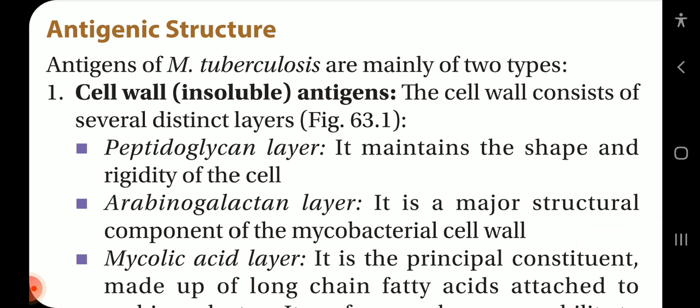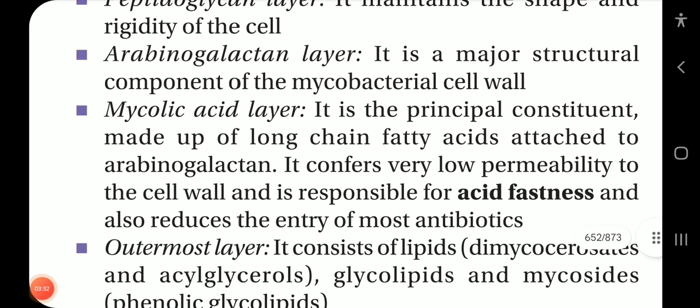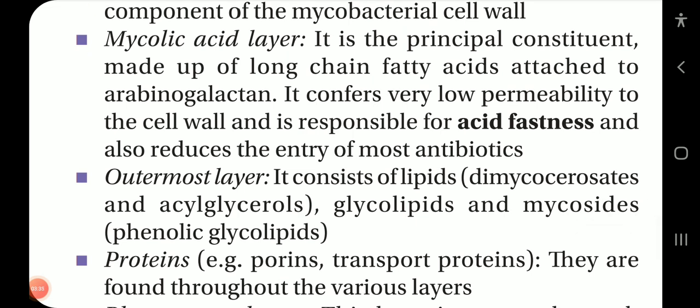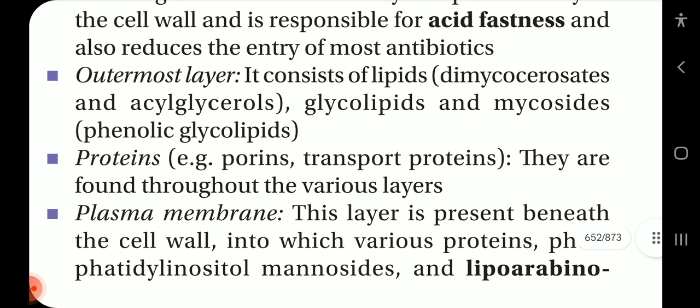Antigens of Mycobacterium tuberculosis are mainly of two types. Cell wall insoluble antigens: the cell wall consists of several distinct layers. The peptidoglycan layer maintains shape and rigidity. The arabinogalactan layer is the major structural component. The mycolic acid layer is the principal constituent made up of long-chain fatty acids attached to arabinogalactan; it confers very low permeability to the cell wall and is responsible for acid fastness, and also reduces the entry of most antibiotics. The outermost layer consists of lipids, dimycocerosates, acylglycerols, glycolipids, and mycolates.